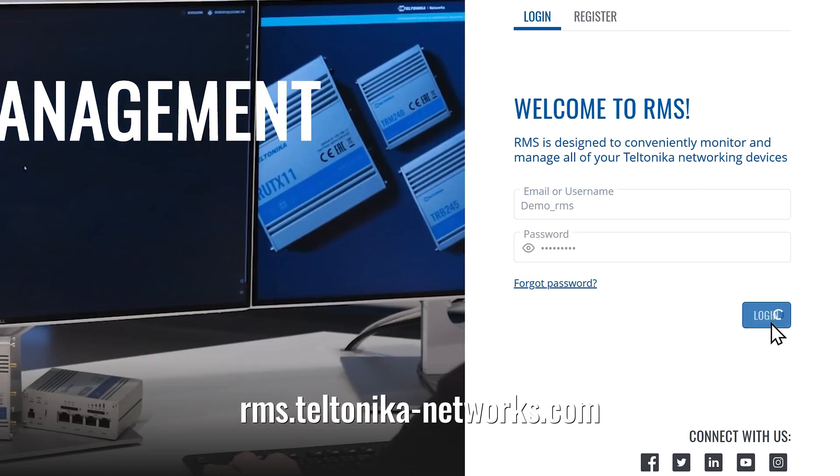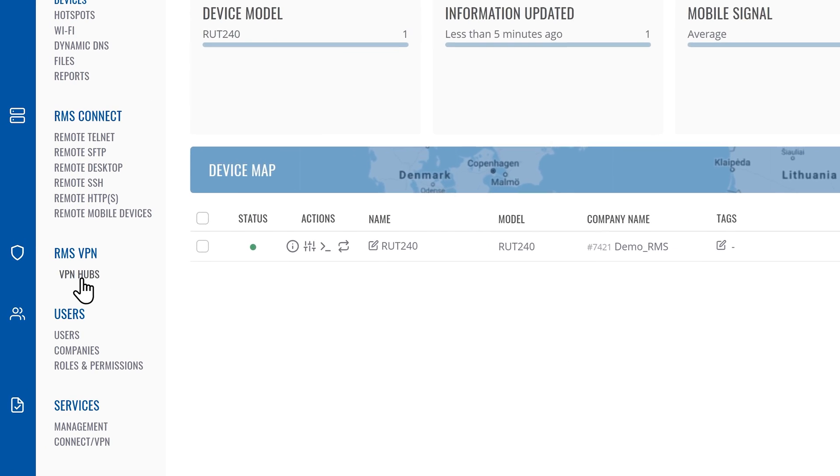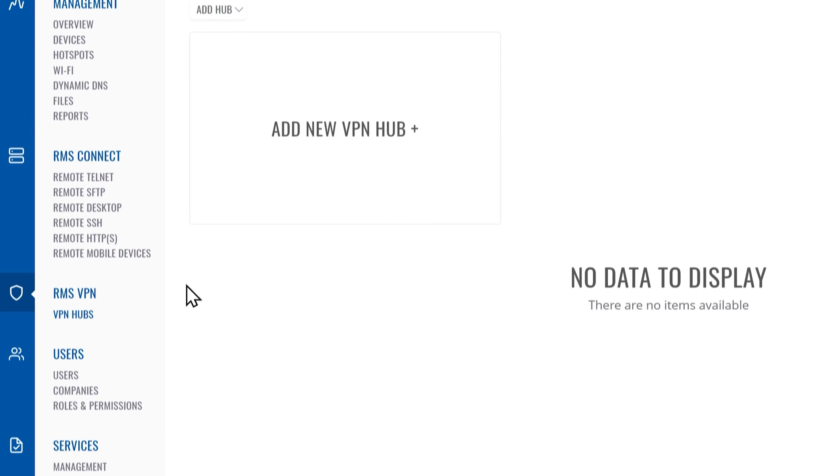For RMS VPN details, consider watching our full step-by-step guide. To set up an RMS VPN, first, connect to RMS. Next, select RMS Hubs on the left sidebar in the RMS VPN section.